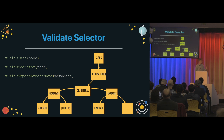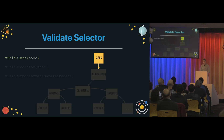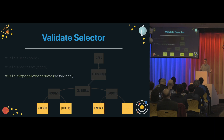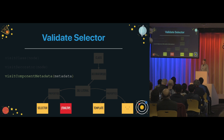Here is how it looks in the actual case. First we visit the class node — the root node of the tree. Then we visit the only decorator it has. After that, we visit the metadata, which is a collection of properties in the object literal passed to the component decorator. We find that the selector is not of type element but an attribute, so we throw a warning.